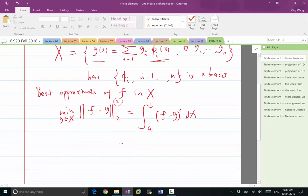Now we can further expand it to integral of (f - sum of g_i). So we are minimizing, now instead of g(x), we are minimizing g_i.